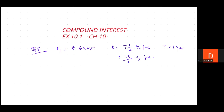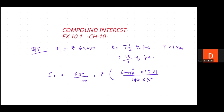First year interest using formula P×R×T divided by 100: that is Rs. 64,000 into 15 by 2, divided by 100. Zeros cancel, giving 320 into 15. First year interest = Rs. 4,800.